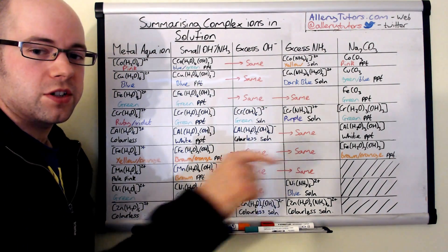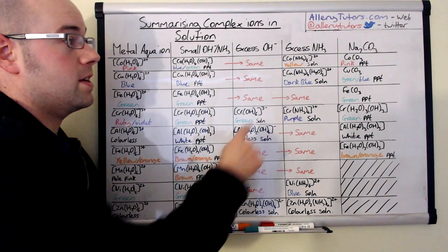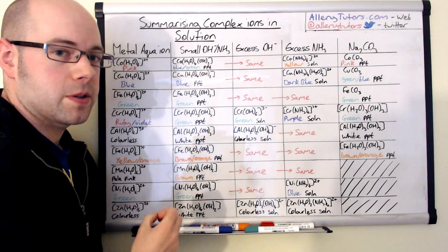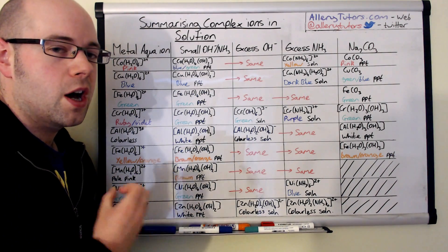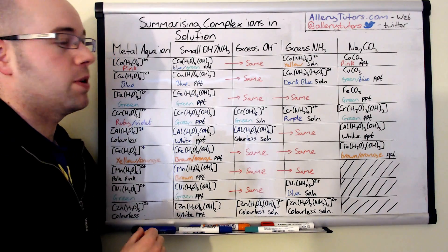Now if you're not sure why these form or why these behave in excess and you want to know more about the reactions, just click on the link below and you can have a look at that video there, and also why this has the shape about the copper one, it's got a funny distorted octahedral shape.